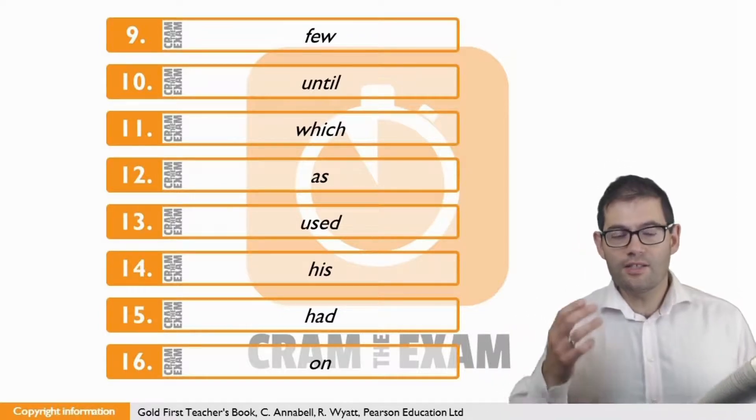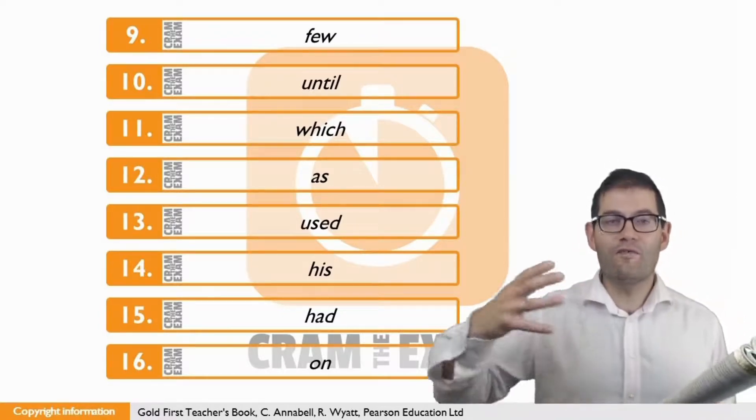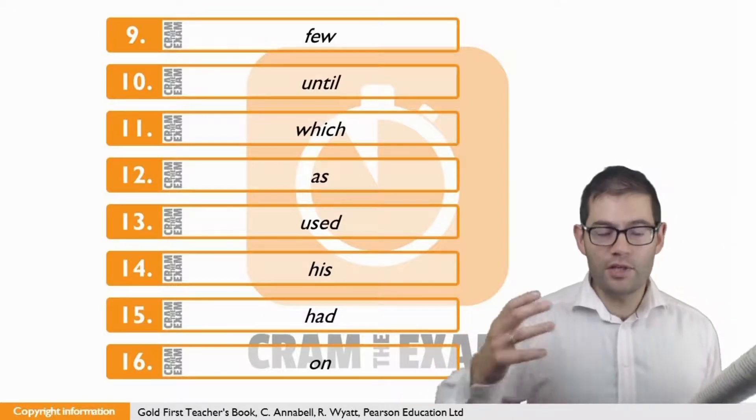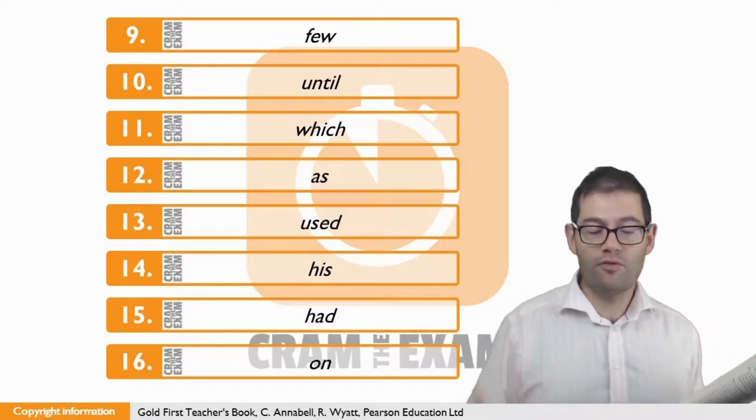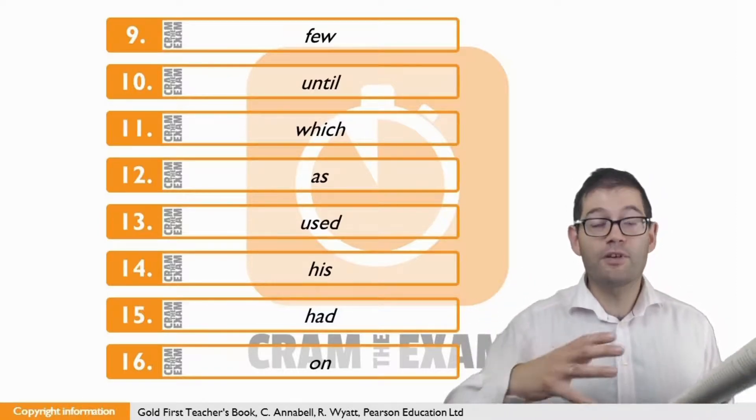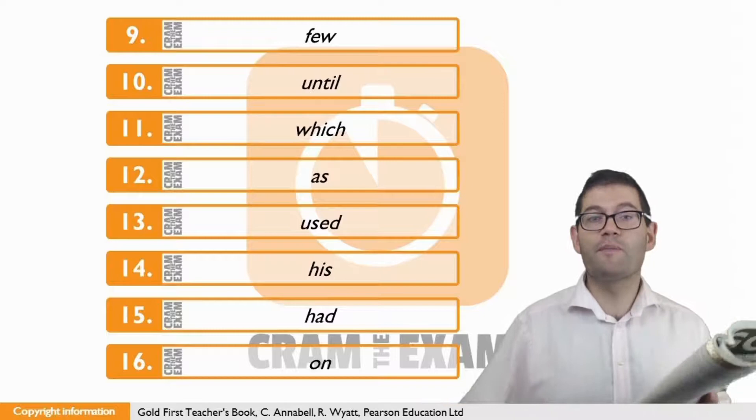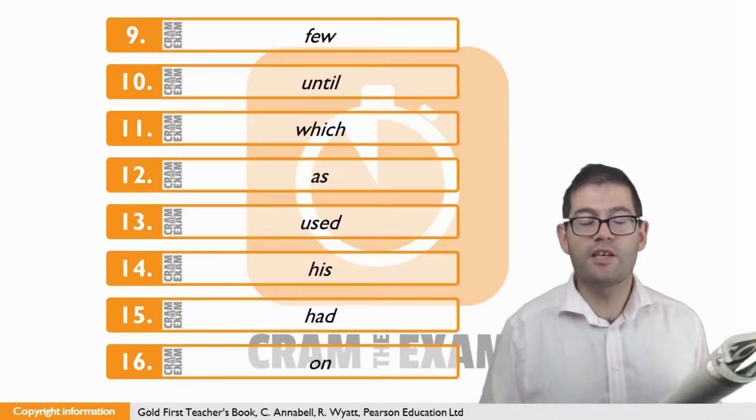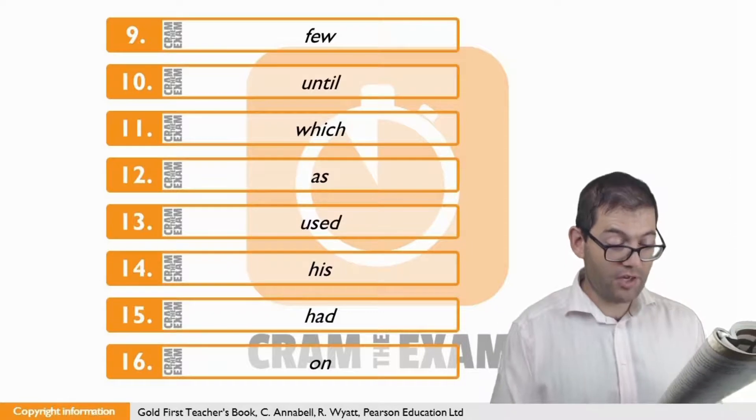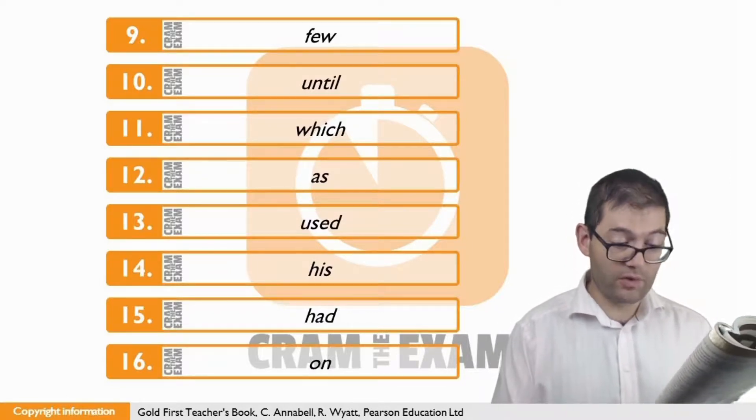For question fourteen, it's describing the way that he invented a style of movement which is unique to him. It belongs to him. We have to choose the correct possessive pronoun that connects this relationship of something belonging to someone else. The answer we're looking for is his, to create his own very individual style of movement.